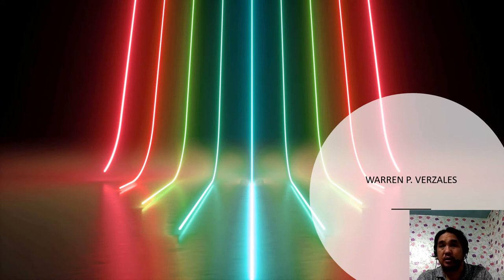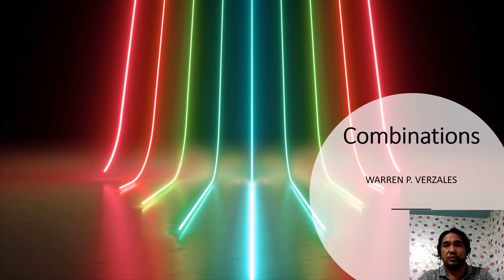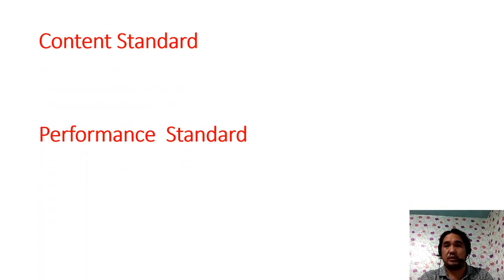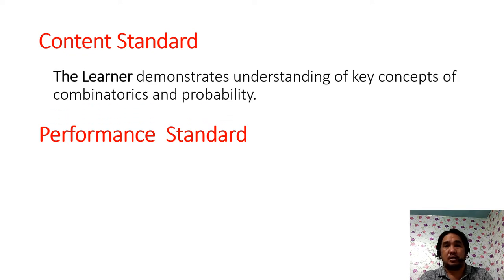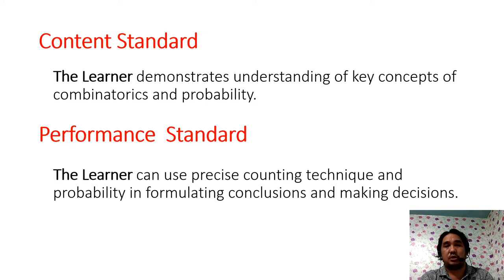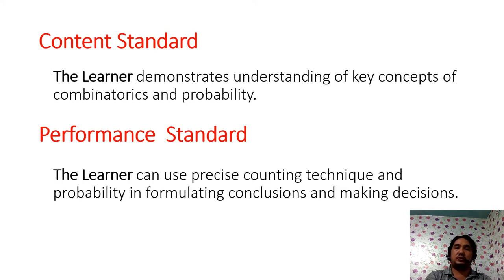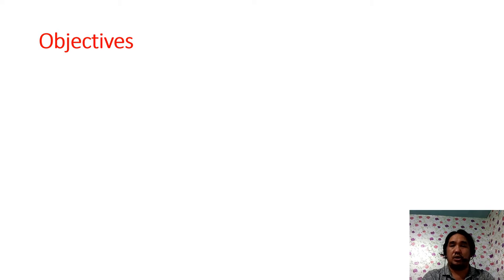Good day. Today we are going to tackle combinations — this is our lesson in Quarter 3, Module 3. The content standard is that learners can demonstrate understanding of the key concepts of combinatorics and probability, and the performance standard is that you can use precise counting techniques and probability in formulating conclusions and making decisions. Today's topic has the following objectives.